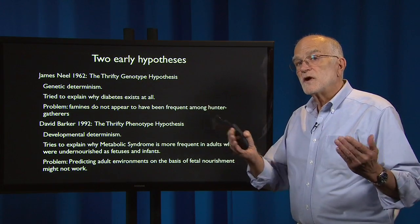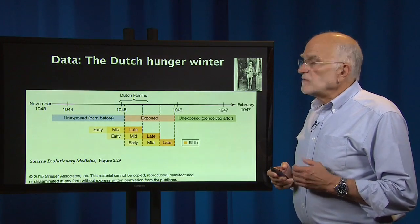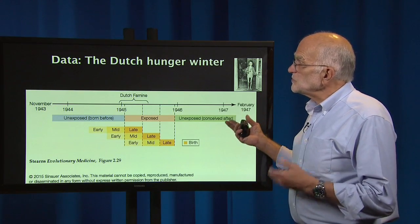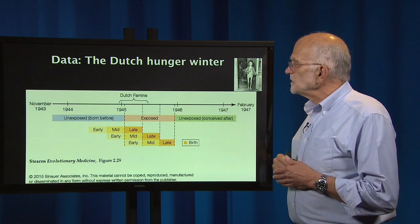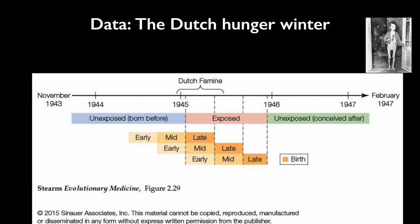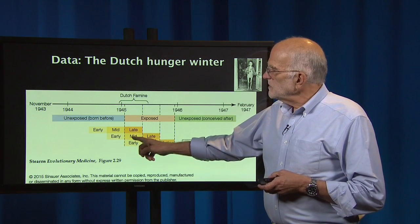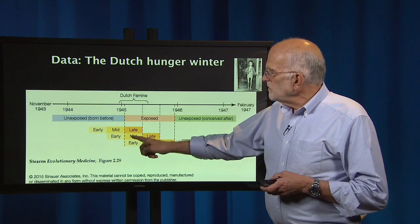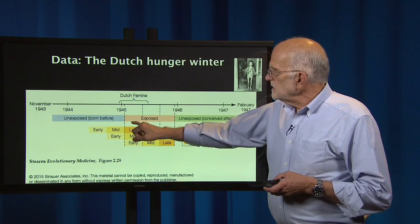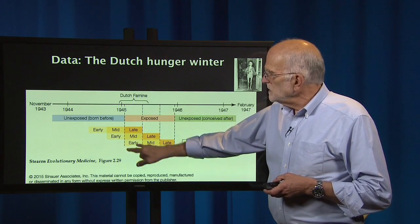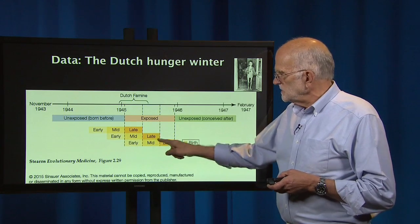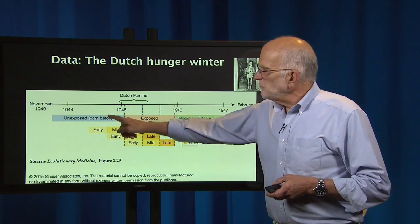However, we do have data — the effects really are real. The most striking data that focused people on this problem come from the Dutch Hunger Winter. At the end of 1944, the Nazis decided they were going to starve the Dutch, and this famine lasted from about November 1944 through into about April 1945. There were women in the Netherlands who were pregnant at the time, and they were either at the start of the famine in late pregnancy, in mid-pregnancy, or in early pregnancy.